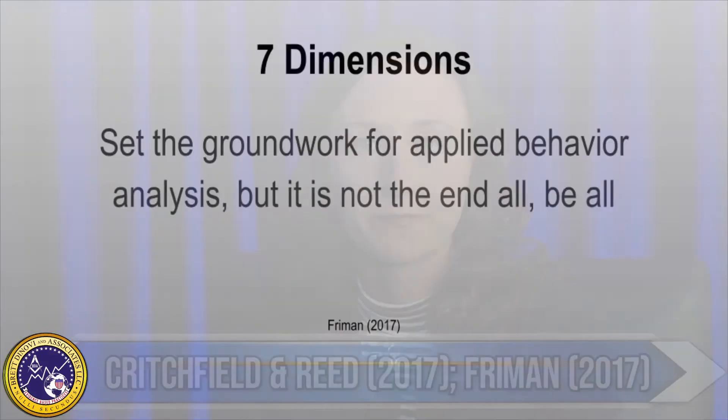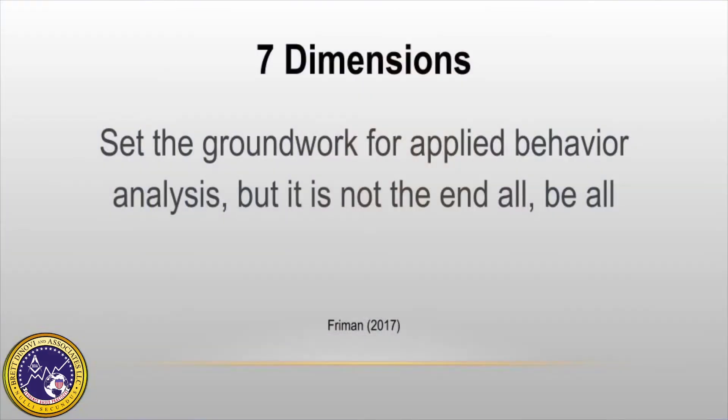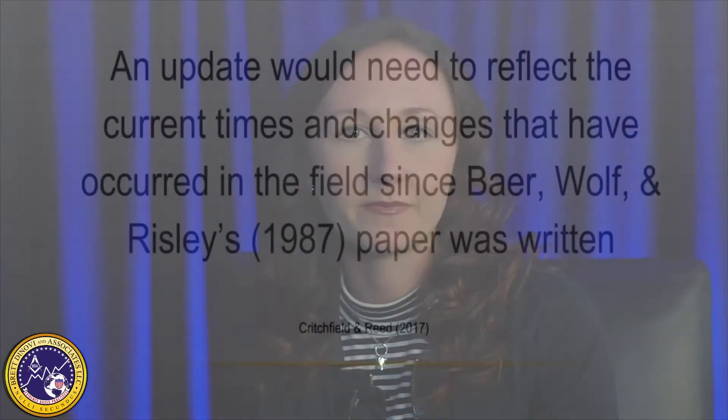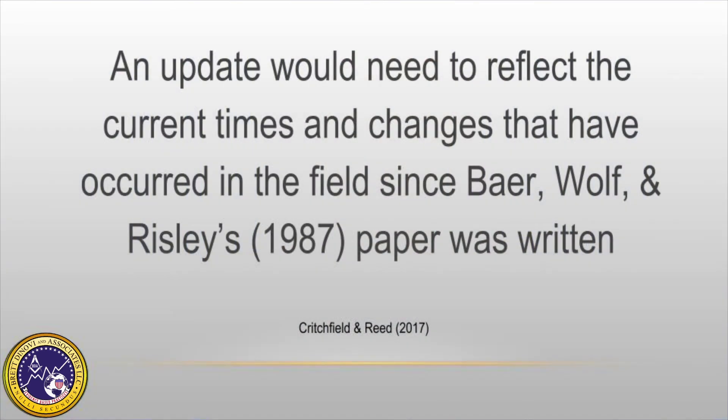Fast forward to 2017, Critchfield, Reed, and Fryman wrote articles arguing that behavior analysts are getting in their own way by remaining too rigid to the dimensions originally set out by Baer, Wolf, and Risley in 1968. Fryman argues that they set the groundwork for applied behavior analysis, but it is not the end-all be-all. There have been at least a few articles calling for a long overdue update to the seven dimensions. It was Baer, Wolf, and Risley who urged analysts to do so in the first place, to ensure that the dimensions remain current. An update would need to reflect the current times and changes that have occurred in the field since their 1987 paper. While using the dimensions as a guideline still aids in keeping out non-behavior analytic ideas, Fryman argues it has also kept some prominent researchers from being published in the Journal of Applied Behavior Analysis, who have since taken their work elsewhere.